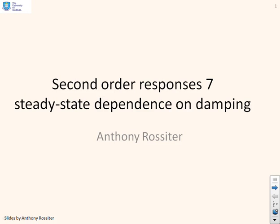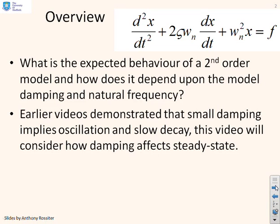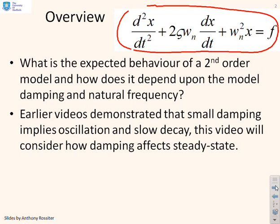This is the seventh video on second-order responses. The focus here is on steady state. We're looking at models of the form given here — a second-order differential equation written in standard form: d²x/dt² + 2ζωn dx/dt + ωn²x = f. In this sequence of videos, we're looking at how the behaviour of x depends upon the parameters, in this case ζ and ωn. This particular video focuses on steady state and asks how the steady state is affected by those parameters.